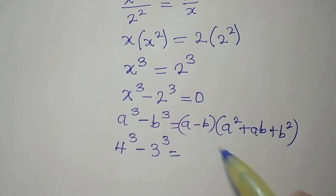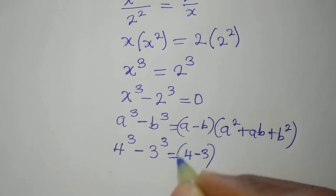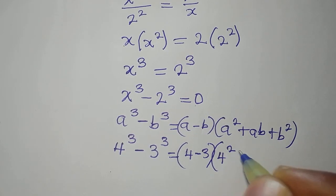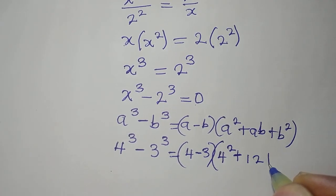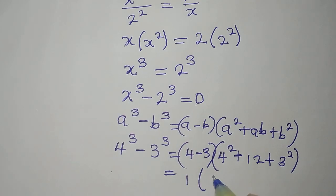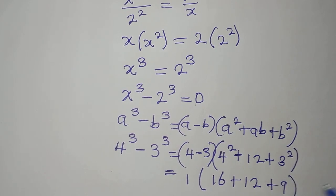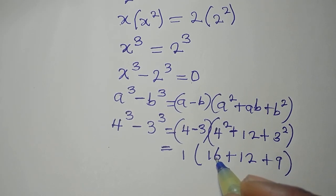Let's use this difference of two cubes to work this quickly. We're going to have a minus b, that will be 4 minus 3, then into a squared, that will be 4 squared, plus ab, that will be 3 times 4 which is 12, plus b squared, that will be 3 squared. Continuing: 4 minus 3 is 1, multiply by 4 squared which is 16, plus 12, plus 9. Adding: 9 plus 2 is 11, 11 plus 6 is 17, so we write 7. Then 1 plus 1 is 2, plus the other 1 is 37. So 37 times 1 is 37.